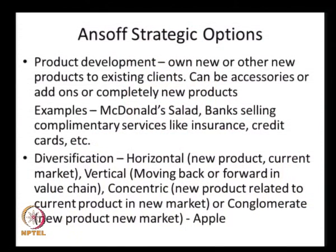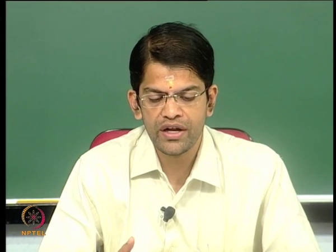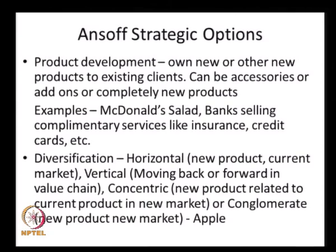The last option is diversification — new products in new markets — which can happen in various directions. Horizontal diversification is a new product in a current market. Vertical diversification can go backwards toward vendors or forward toward customers in the value chain. Concentric diversification is a new product related to a current product in a new market. Conglomerate diversification is the classic form — entirely a new product in a new market. Apple is a very good example: it started with laptops and has since diversified into different product ranges. The choice of position in this product-market grid determines how resources within an organization will be used.